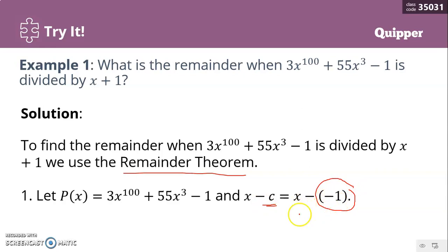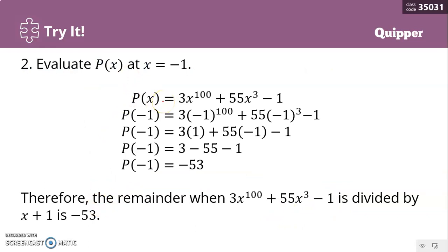Our C is negative 1. We evaluate P of X at X equals negative 1. So P of negative 1 equals 3 times negative 1 raised to 100, plus 55 times negative 1 cubed, minus 1. Negative 1 raised to 100 is positive 1 because 100 is even, so a negative base raised to an even exponent is positive. Therefore 3 times 1 equals 3.